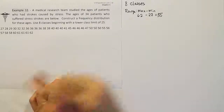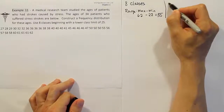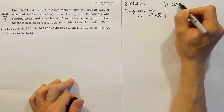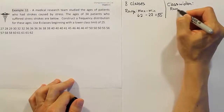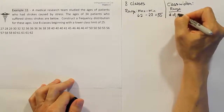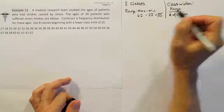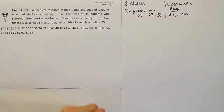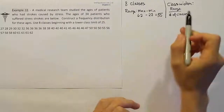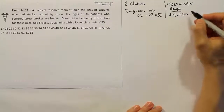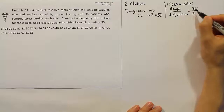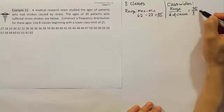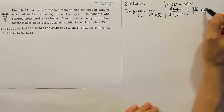Our next step is to find the class width. The class width formula is the range divided by the number of classes. So we take the range of 35 and divide by 8 — the number of classes — which gives us four and three-eighths, since 8 goes in four times evenly with three-eighths left over.